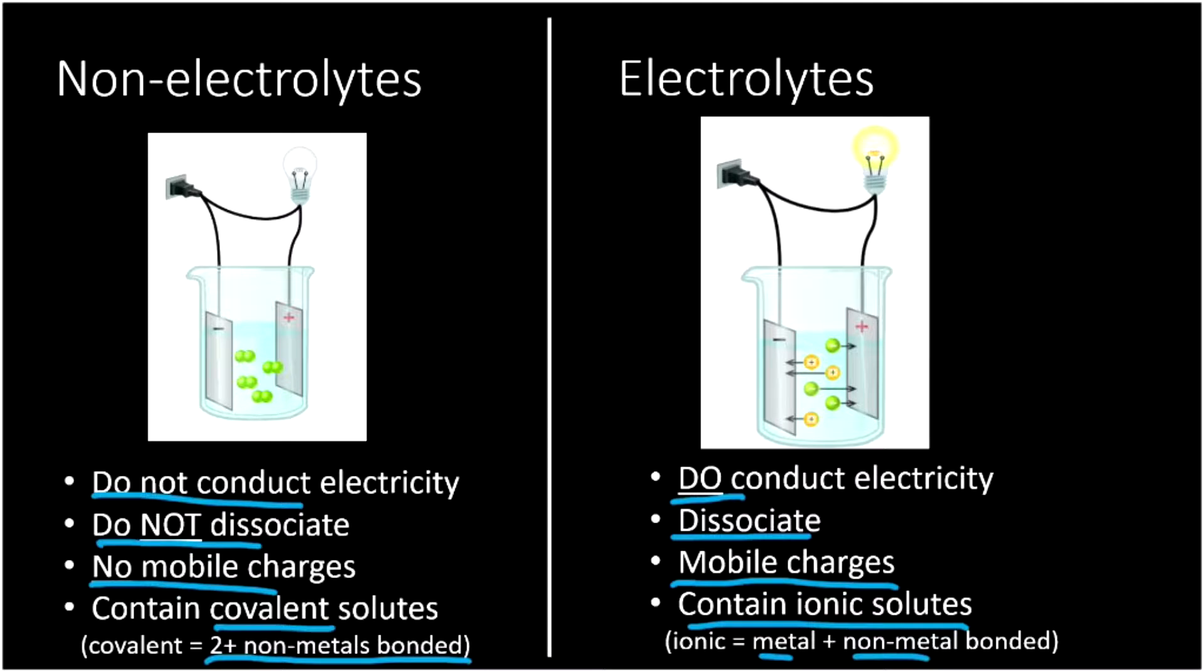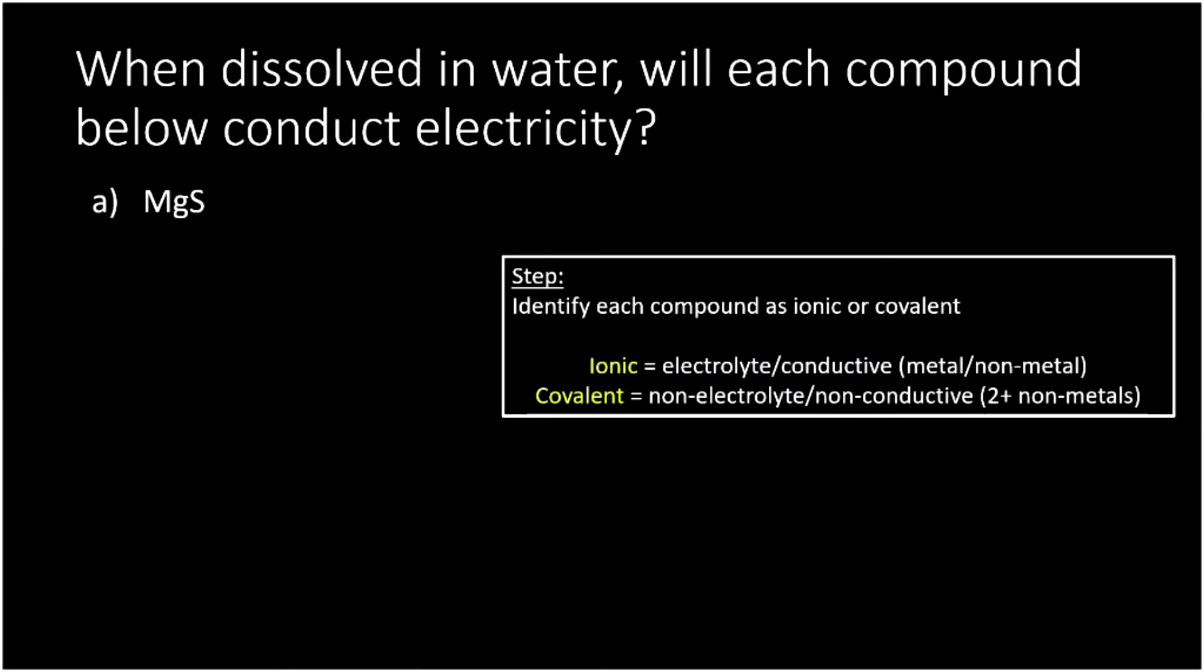So let's take a look at categorizing things as electrolytes or non-electrolytes based off of this information. Here we're asked, when dissolved in water, will each compound below conduct electricity? And there's just one step here, really. I need to decide if it's ionic or covalent. So an ionic compound is going to be an electrolyte and it'll be conductive and it'll be made of a metal and a non-metal, just like we said on the previous slide. How do I tell if it's a metal and a non-metal? How do I tell if it's ionic or covalent? I need to use my periodic table.